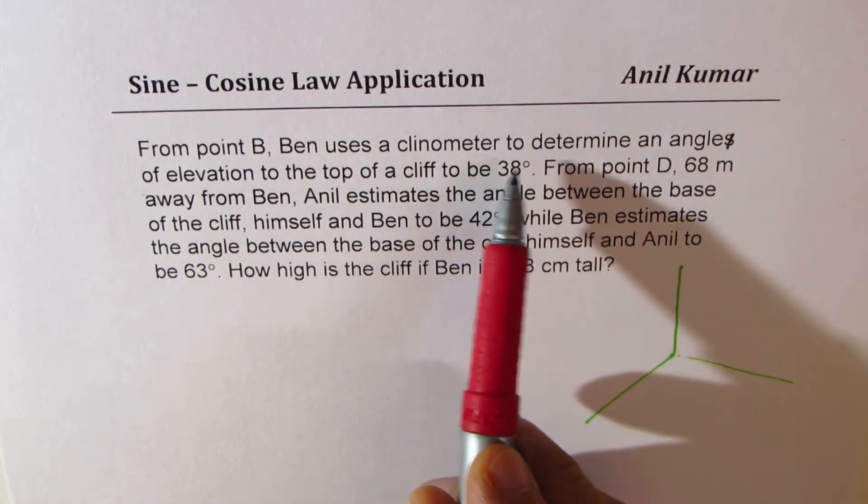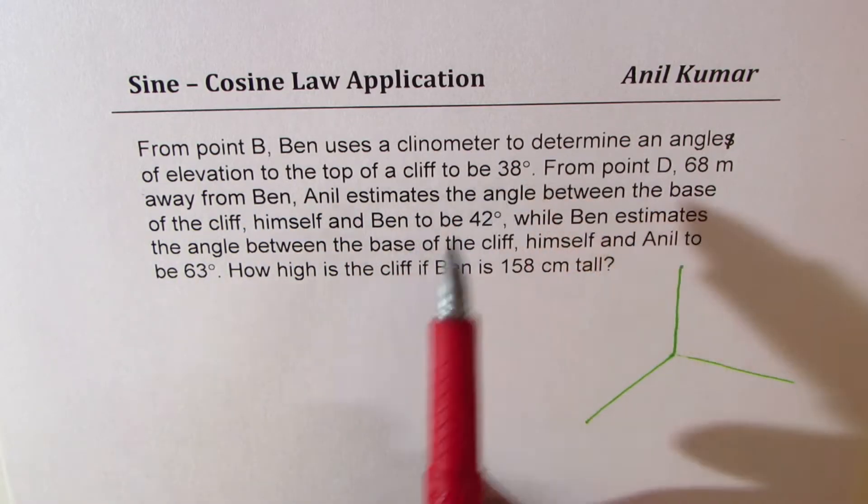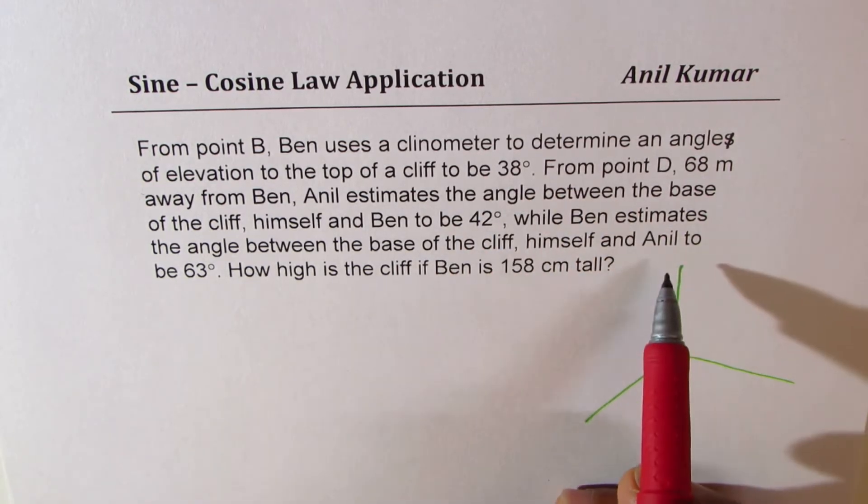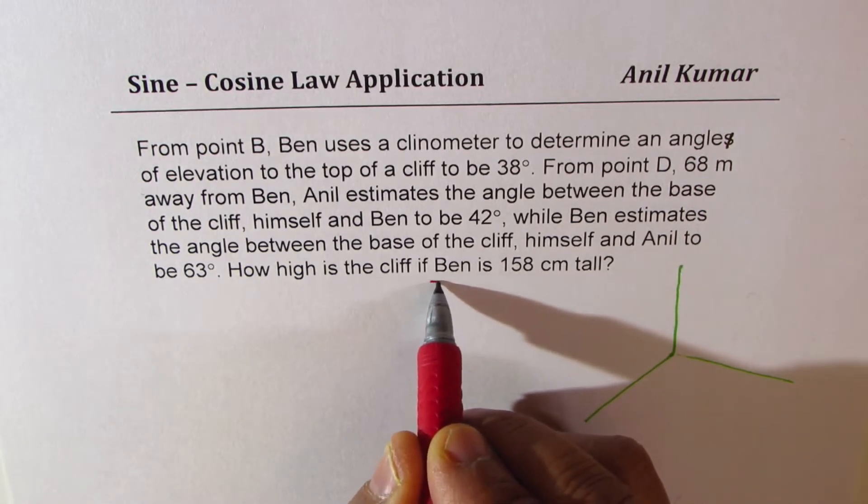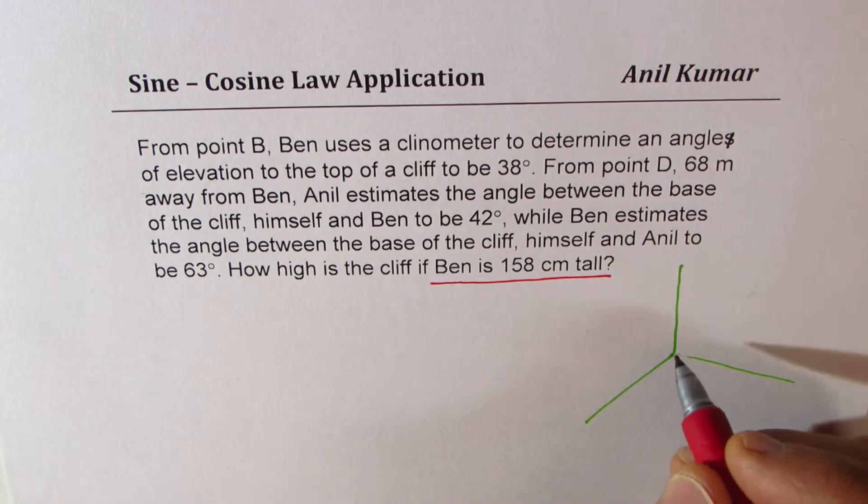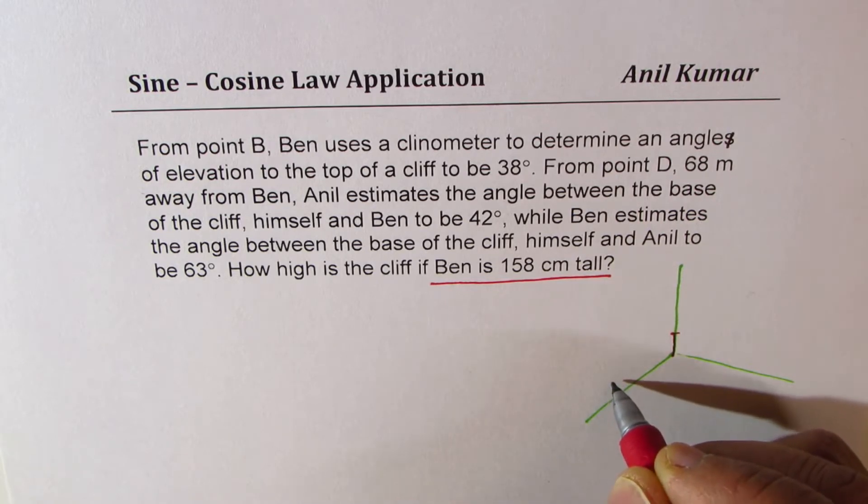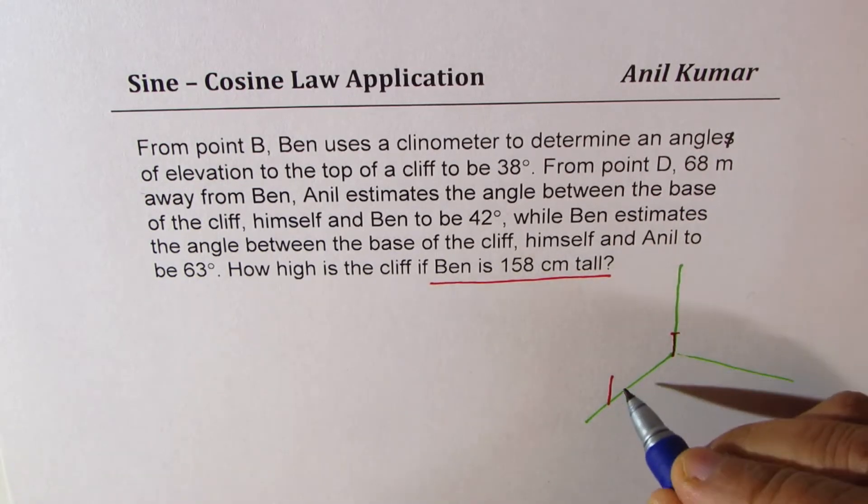It says Ben uses a clinometer to determine an angle of elevation to the top of the cliff to be 38 degrees. So angle of elevation is given to be 38 degrees. And later, we are also given height of Ben. The critical issue here is that Ben is 158 cm tall. That means, if we consider that height of 158 meters, and if we locate Ben somewhere here, then the angle of elevation will truly be from the eye level. We'll consider that to be the height.